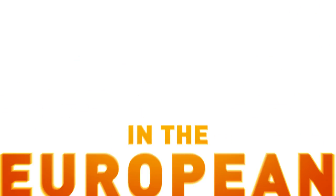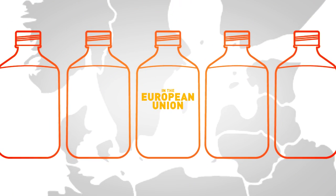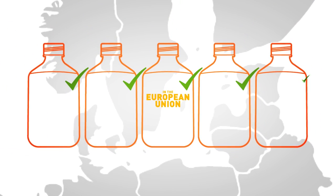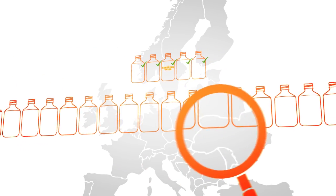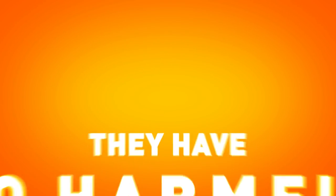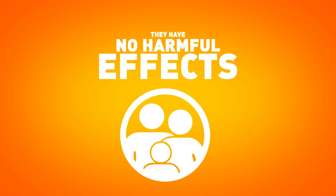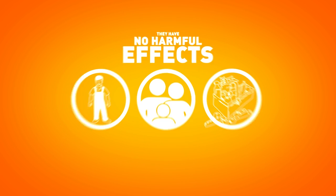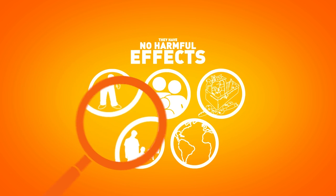In the European Union, no plant protection product can be used unless it has first been scientifically established that they have no harmful effects on consumers, farmers and local residents, as well as passers-by and the environment.